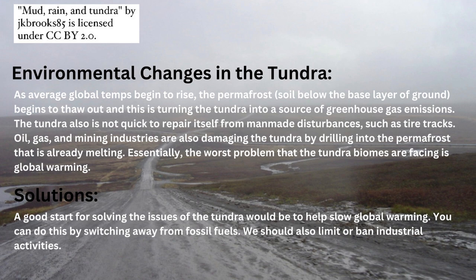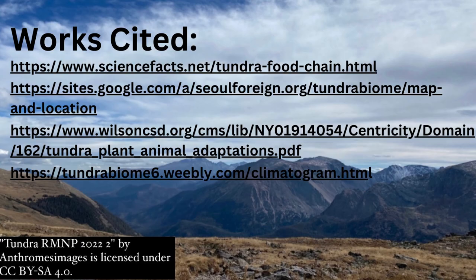In order to slow the melting of the permafrost, we need to slow global warming. We can do this by limiting or cutting out the use of fossil fuels. We should also work to ban or limit industrial activities in the tundra.